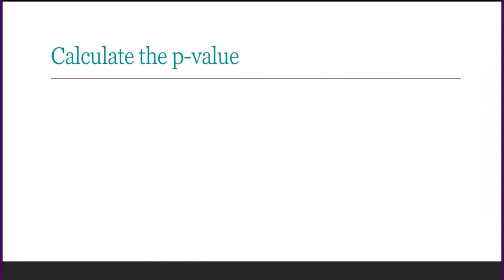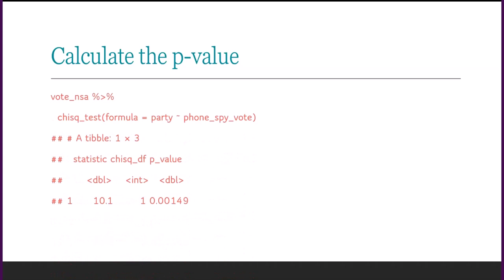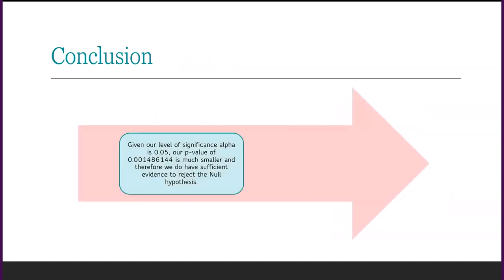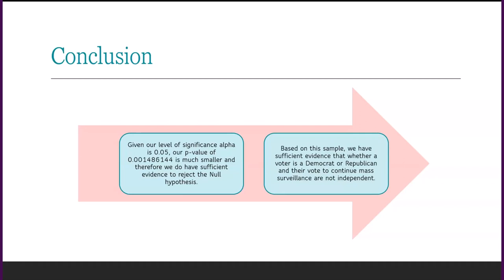Finally, we'll calculate the p-value and validate our results. The significance level for our test was set at 5%. Our calculated p-value was far below the significance level at 0.15%. Given that our level of significance is 5%, our p-value of 0.15% is much smaller, and therefore we do have sufficient evidence to reject the null hypothesis. Based on this sample, we have sufficient evidence that whether a voter is Democrat or Republican and their vote to continue mass surveillance are not independent — they are strongly associated variables.